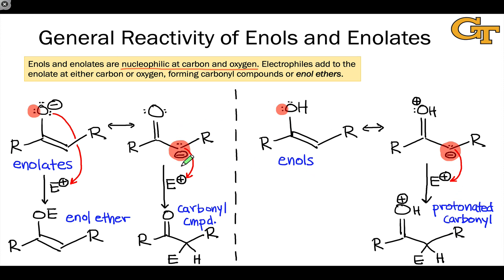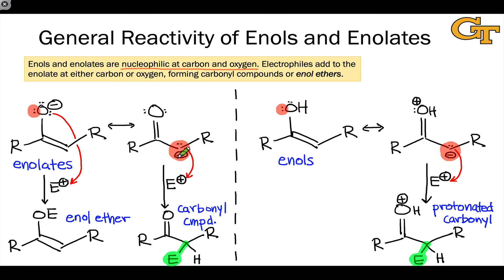If we think about how the enol or enolate was generated through a deprotonation at the alpha carbon, we'll realize that from the perspective of the original carbonyl compound, this looks like a substitution reaction — a hydrogen at the alpha position is replaced with E, the electrophilic group. From the enol or enolate's perspective, we're doing an electrophilic substitution reaction. From the electrophile's perspective, this could be a nucleophilic substitution or an addition process.